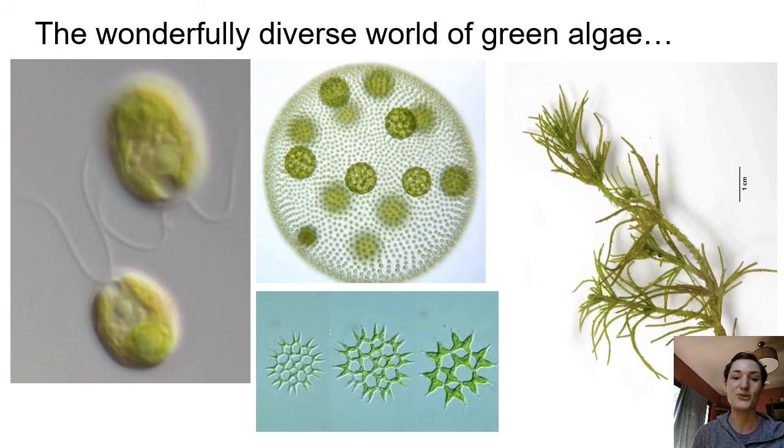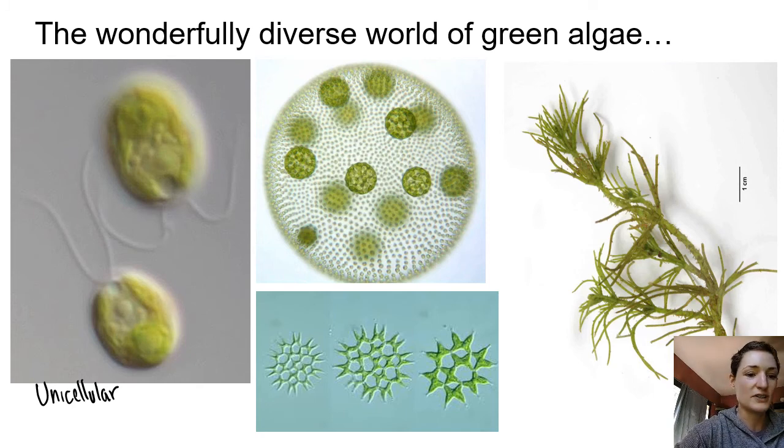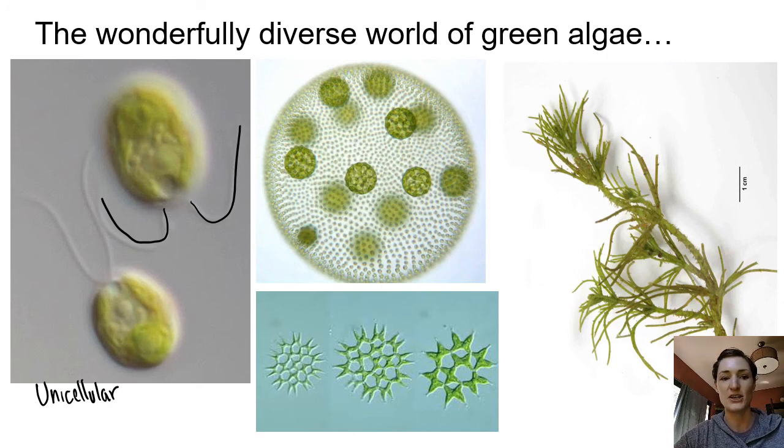Green algae are really cool. It's unfortunate we're not going to be looking at them together in lab. We often get a lot of diversity that we get to see. So there's unicellular forms here on the left side. These are Chlamydomonas. They have this little eyespot and two flagella, but those flagella are whiplash flagella, notably not heterocont flagella.